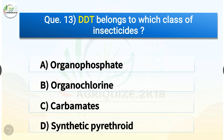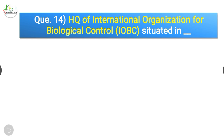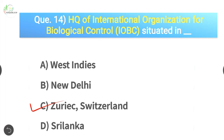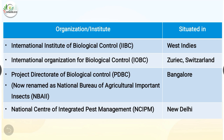Question number thirteen: DDT belongs to which class of insecticides? Options are organophosphate, organochlorine, carbamates, or synthetic pyrethroid. The correct answer is option B, organochlorine. Question number fourteen: headquarters of International Organization for Biological Control (IOBC) is situated in — options are West Indies, New Delhi, Zurich Switzerland, or Sri Lanka. The correct answer is option C, Zurich, Switzerland. International Institute of Biological Control is in West Indies; National Bureau of Agricultural Insect Resources is in Bangalore; National Centre of Integrated Pest Management is in New Delhi.